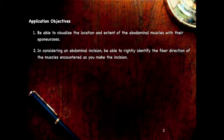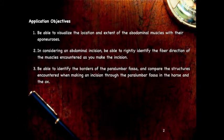When we consider making an abdominal incision, we want to be able to correctly identify the fiber direction of the muscles encountered, because we're not going to make incisions that transect the muscle fibers but rather run parallel to them. We also want to identify the borders of the paralumbar fossa and compare the structures encountered when making an incision in the paralumbar fossa in the horse versus the ox.